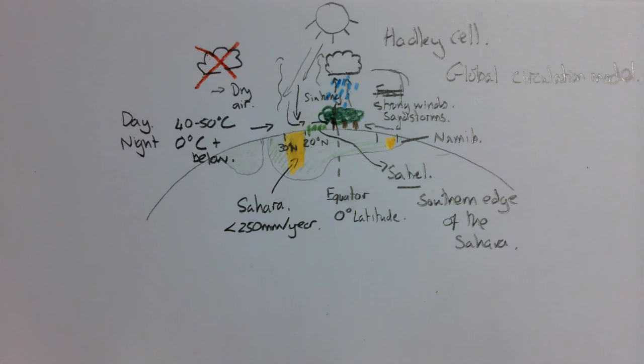At the equator, because it is now hot, what happens to the air? Excellent. It rises. And that's because it's less dense.